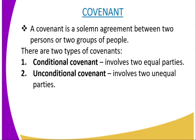We have two types of covenants: conditional covenants and unconditional covenants. Conditional covenants involve two equal parties — for example, a man and a woman, or a man and a man, a woman and a woman. Unconditional covenants involve two unequal parties, like a man and God.